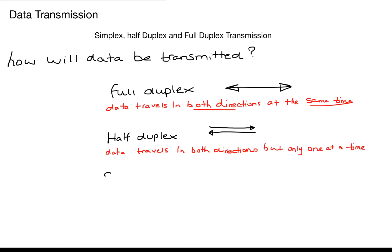And then finally for our simplex transmission, it's probably the most simple one of them all. Data can only travel in one direction. In your exam the most likely question to get for this is they will give you a scenario and you would have to recommend which data transmission you would use.